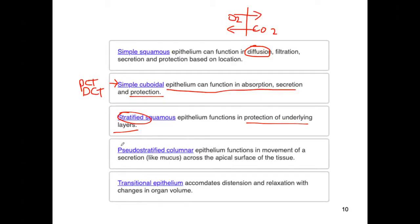Pseudostratified — remember pseudo means false — is affiliated with cilia and found usually in the respiratory tract, associated with mucus from goblet cells. The epithelium functions in the movement of secretions: you need the cilia to move mucus across the apical or top surface. Transitional accommodates both distension and relaxation, such as the urinary bladder or ureters that can expand.